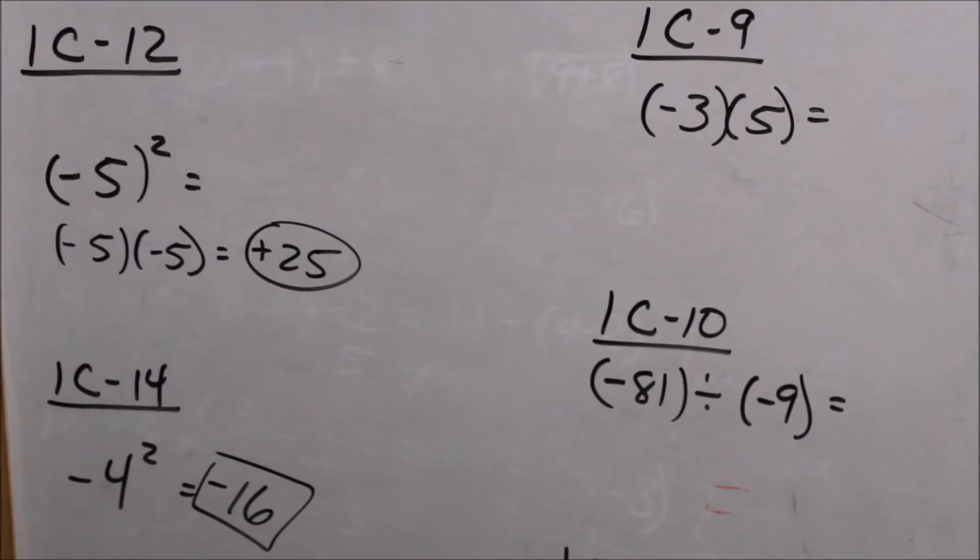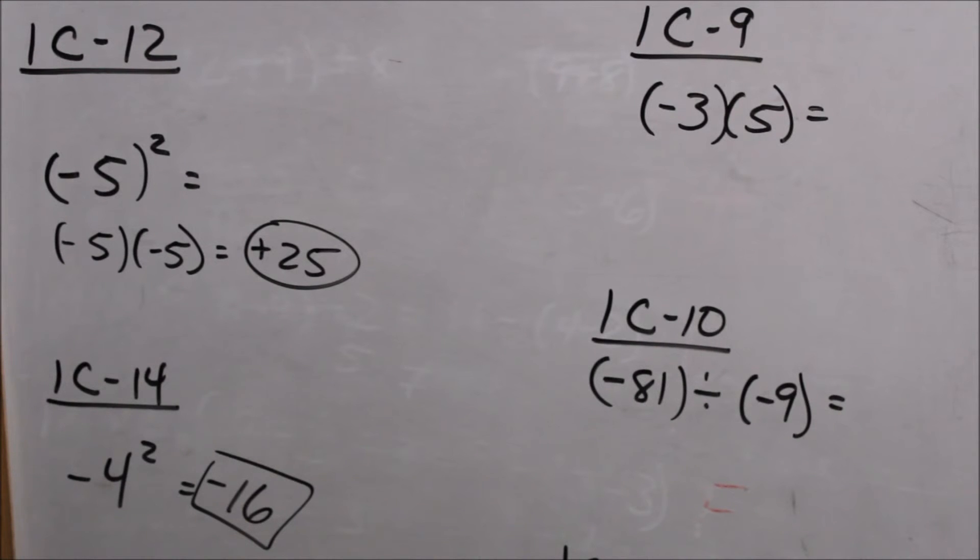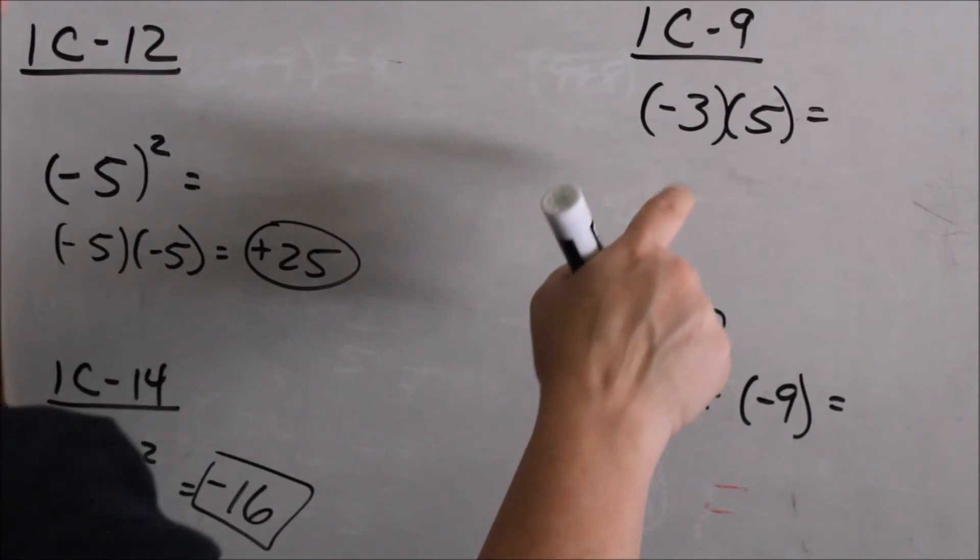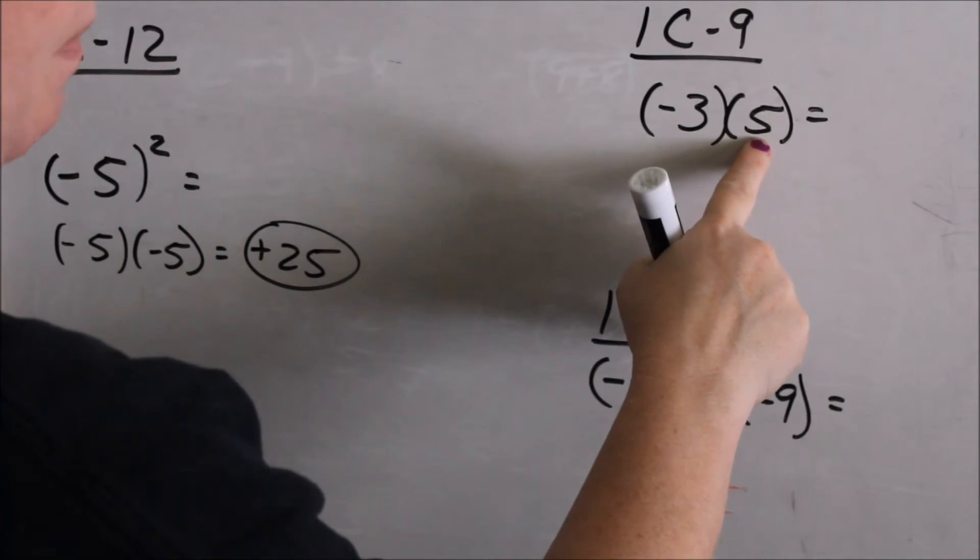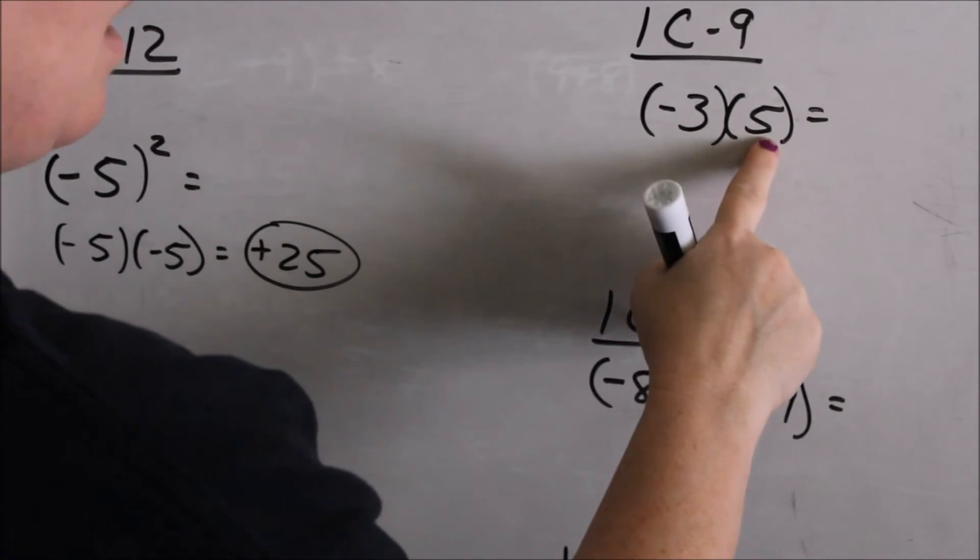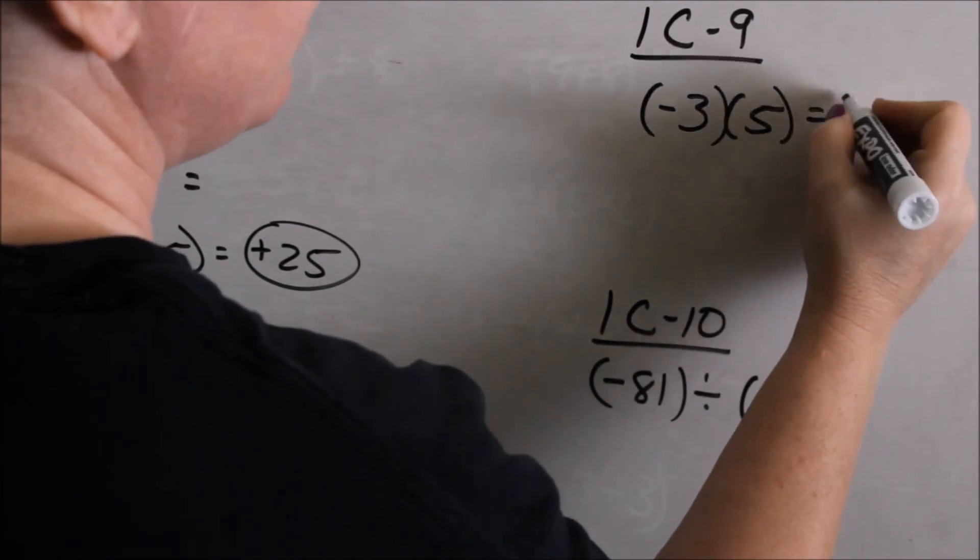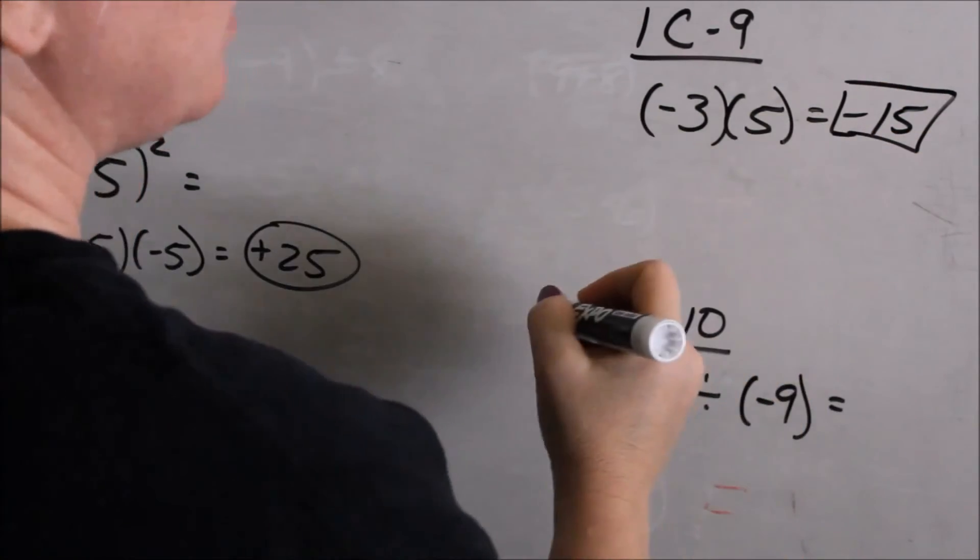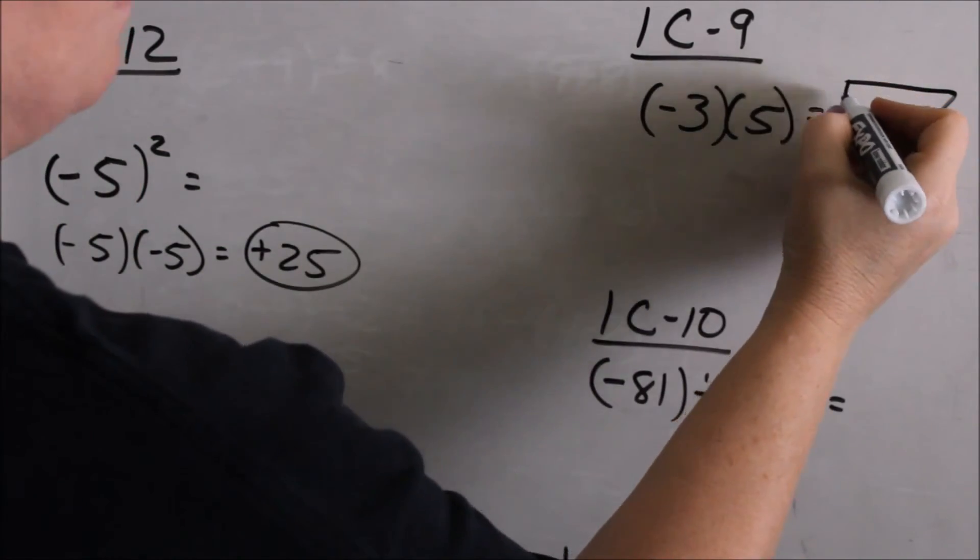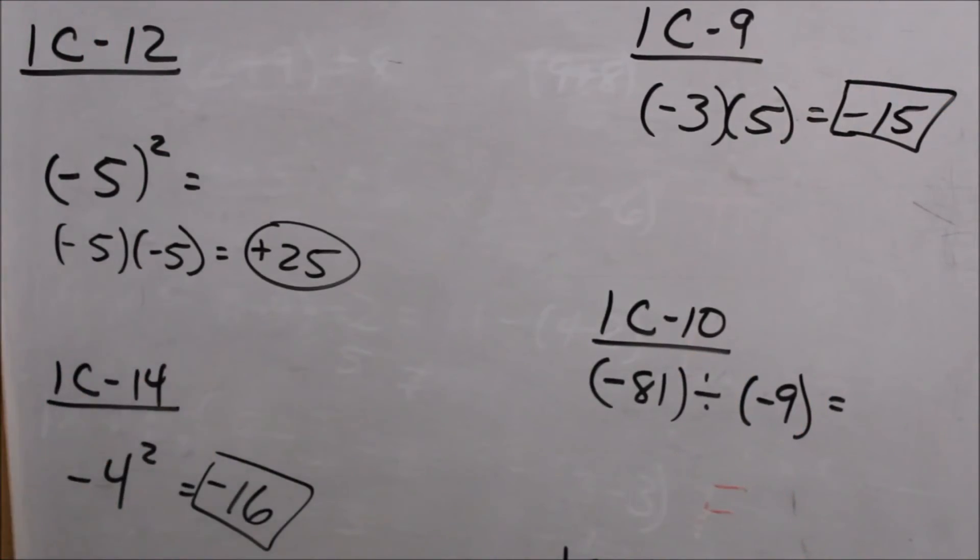Looking at 1C9, this is a review of multiplying and dividing positive and negative numbers. Here you have a negative 3 times a positive 5. A negative times a positive is a negative, so that would be negative 15. Remember, a negative times a negative becomes a positive. Only in math does two negatives make a right.